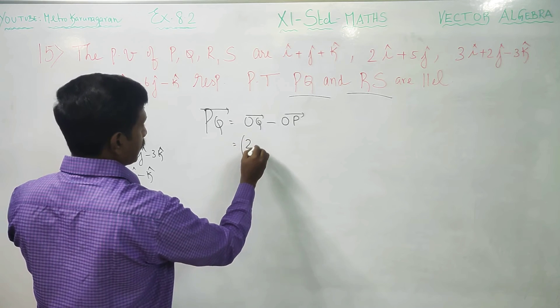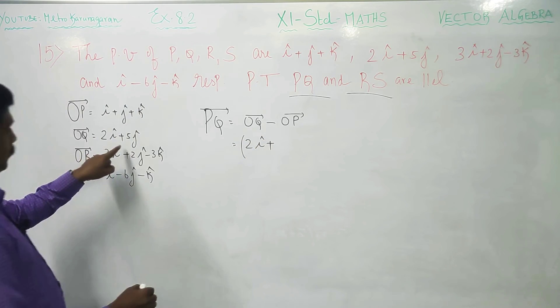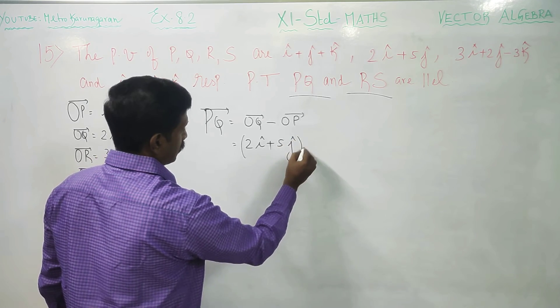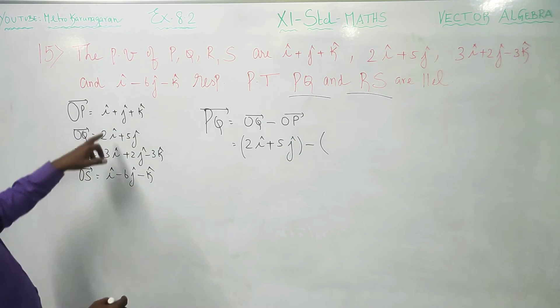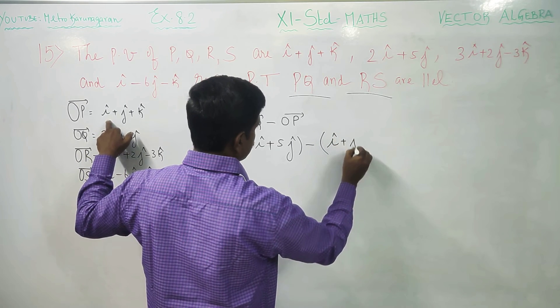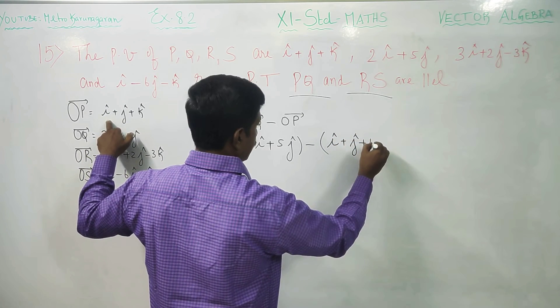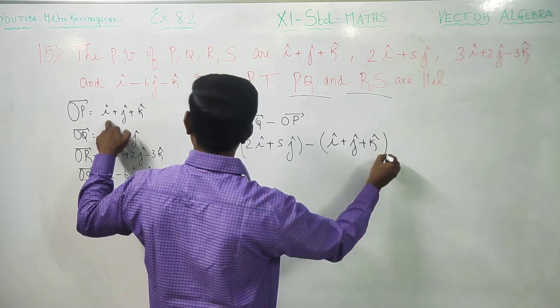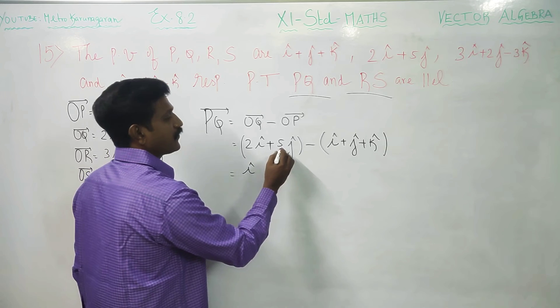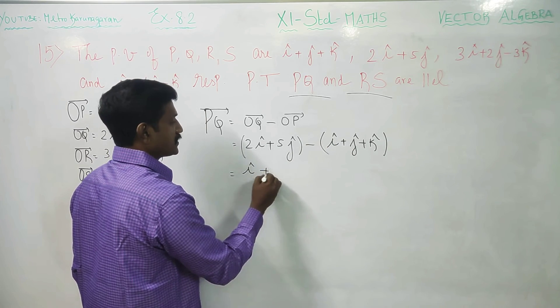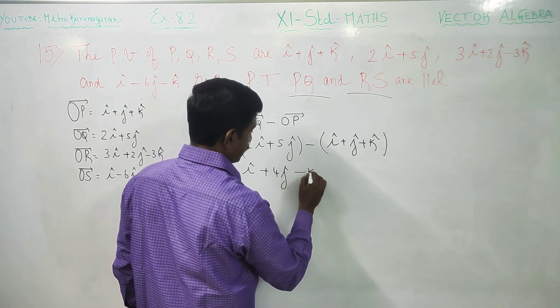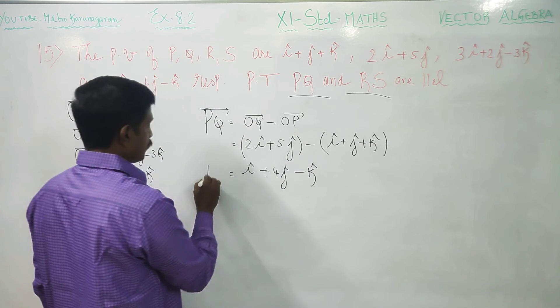What is my OQ vector? OQ is 2I plus 5J minus OP vector. OP is I plus J plus K. This is my OP vector. If you start subtracting 2 minus 1 becomes I vector, then 5 minus 1 is 4J vector, then 0 minus K is minus K vector.